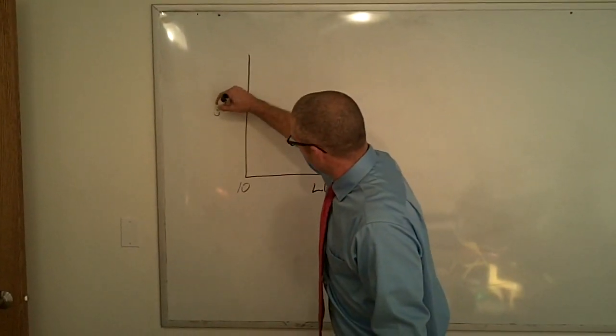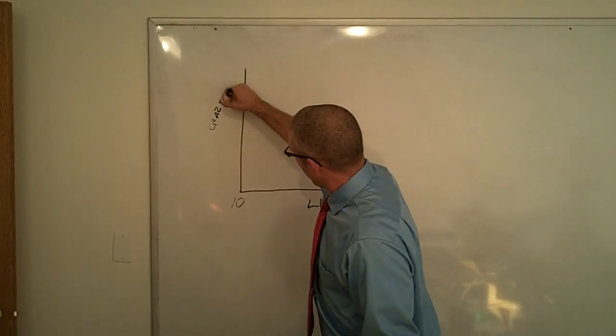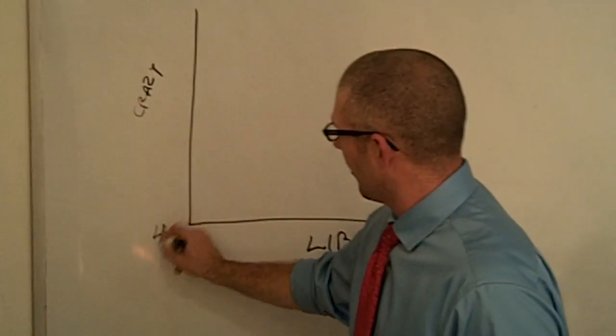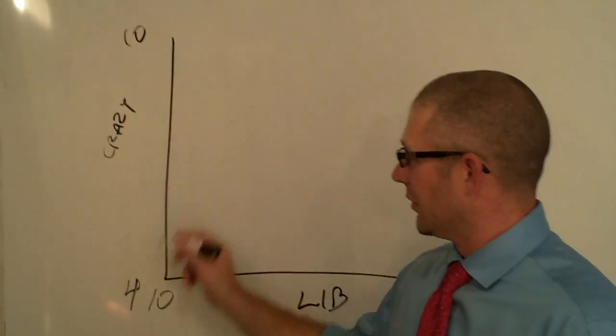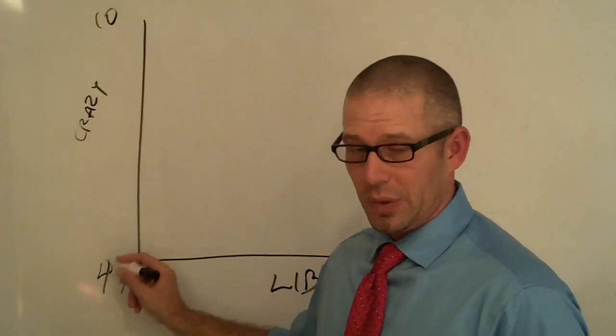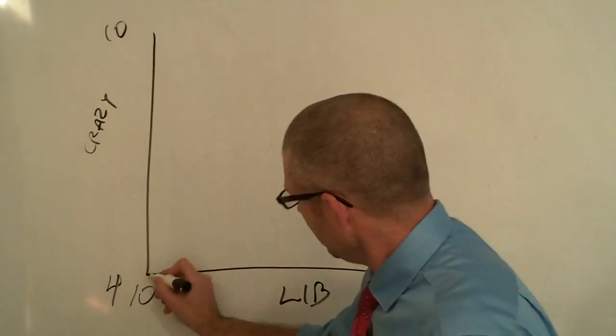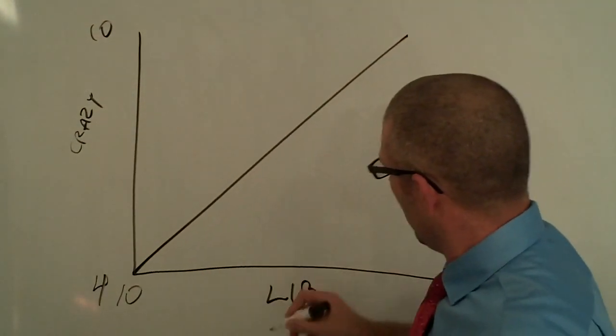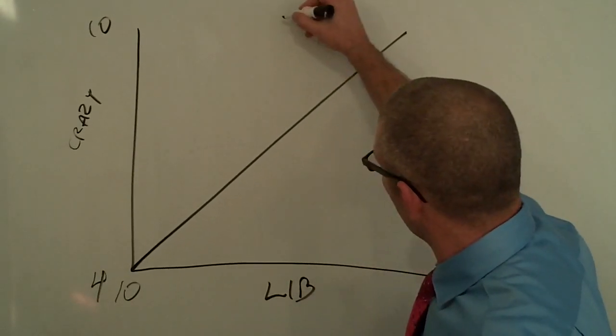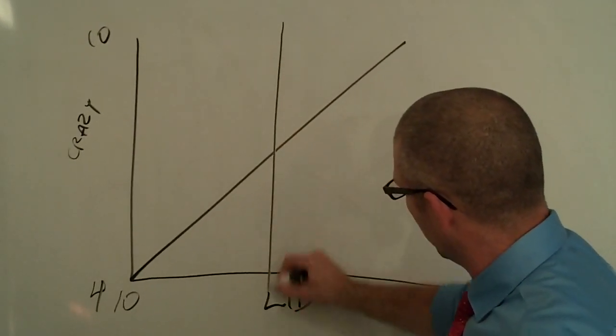We have our crazy axis over here that goes from 4 to 10 because we know that there are no liberals that are below at least a 4 crazy. So here is our crazy line. So let's start chopping this thing up. Our first zone is right here.